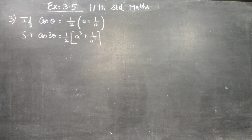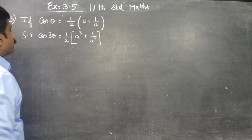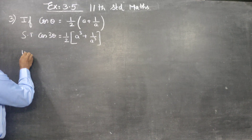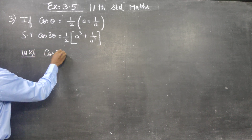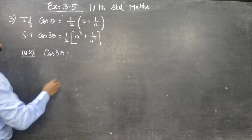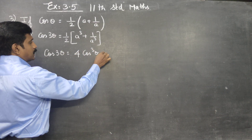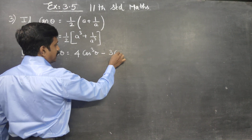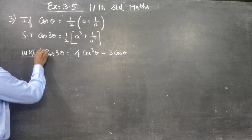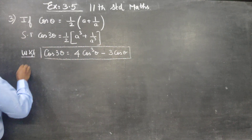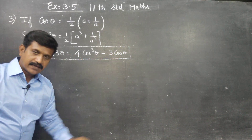For 7th standard students, we need to show that cos 3θ equals its given cos θ value. There is a multiple angle formula for cos 3θ. The ready-made formula is: cos 3θ = 4cos³θ - 3cosθ.